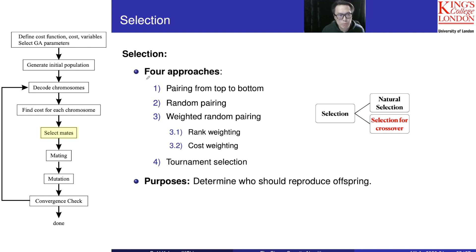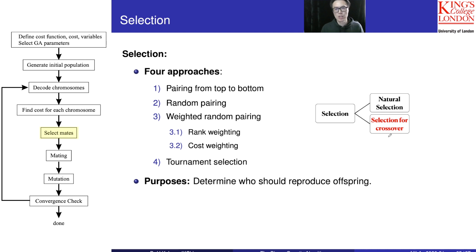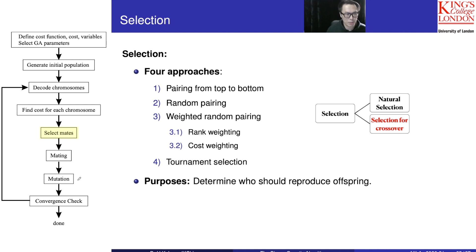Now we are talking about the second part of the selection. Selection is separated into the lexo-selection and then later on the selection for crossover. After we select the n-keep, the upper chromosomes, they will act as the parents and we are going to choose some of them to perform the crossover and mutation as well. So this selection is mainly for these two operations.